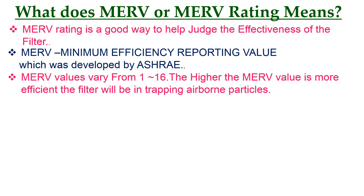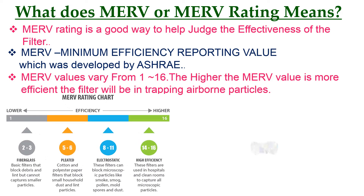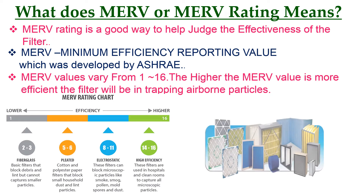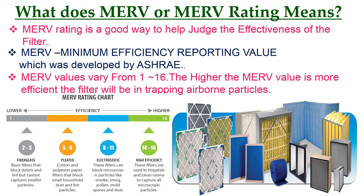The table below shows the MERV rating from MERV 1 to 16 based on efficiency. As you can see in this table, MERV 2 to 3 shows lower efficiency fiberglass filters. MERV 14 to 16 shows the high efficiency filters, which are HEPA and ULPA filters.